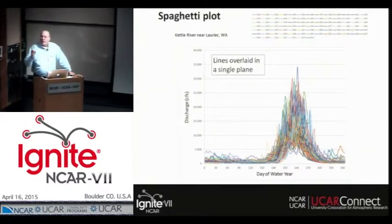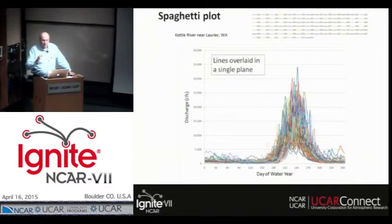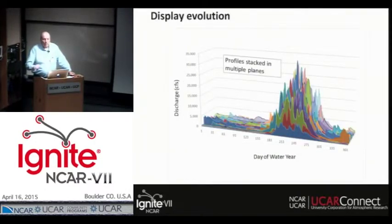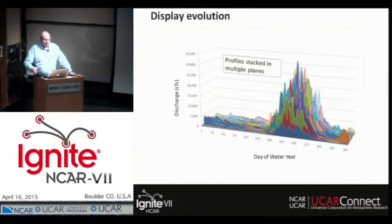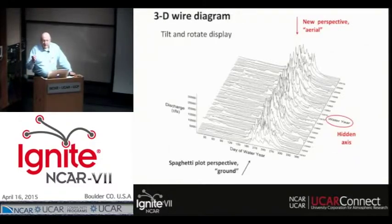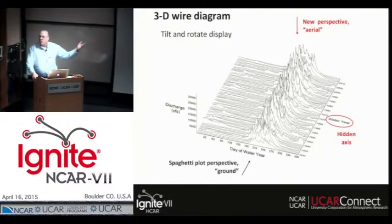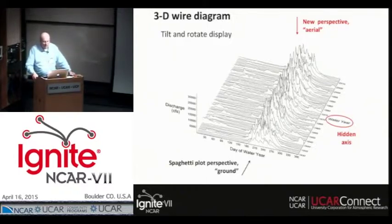But in that lies the solution, because here the assumption is lines overlay within a single plane. If we alter our perception and look at it differently, it opens up a new opportunity. In this case, don't think of them as lines — think of them as stacked profiles. By doing so, we have a hidden axis that reveals itself that we can use. Let's turn it into a wire diagram. You can see that hidden axis is the year. The spaghetti plot sees this mountain range at ground level — let's look at the mountain range from the sky.